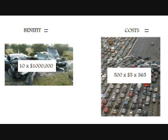However, it will make 500 drivers per day late for work by an average of 10 minutes. The average wage in the United States is in the region of $30 per hour, so that makes a daily loss of $2,500 and a yearly loss of $912,500. Therefore, the net benefit of option A is $87,500. Provided it costs less than that to put up the signs, it should go ahead.